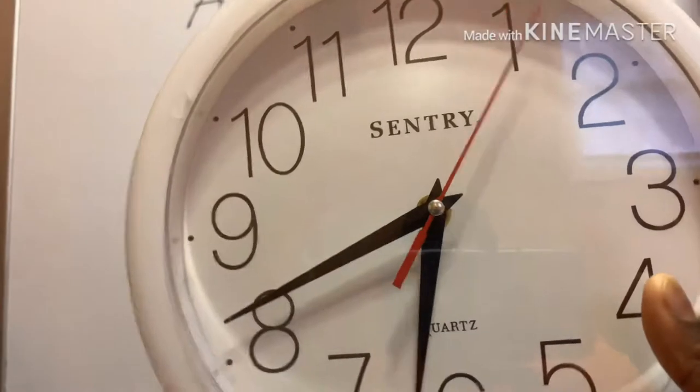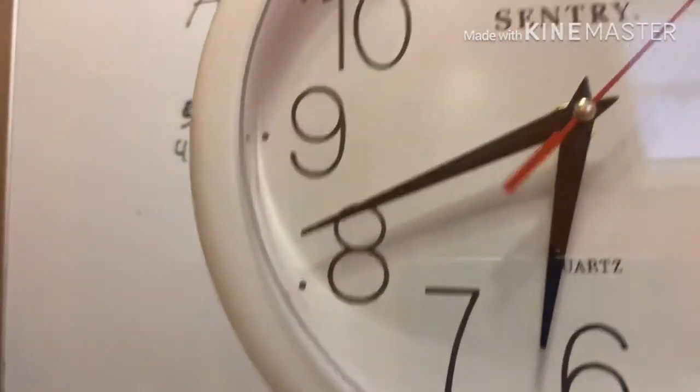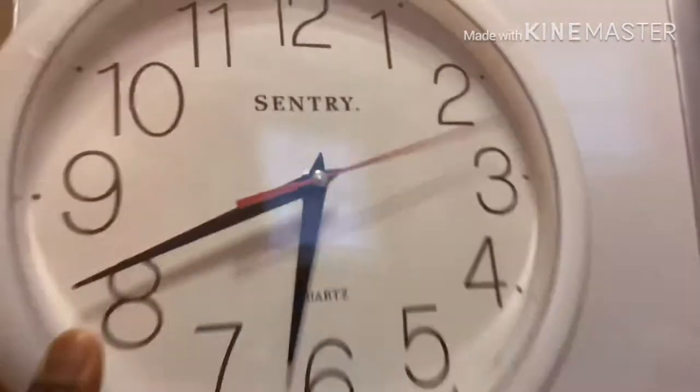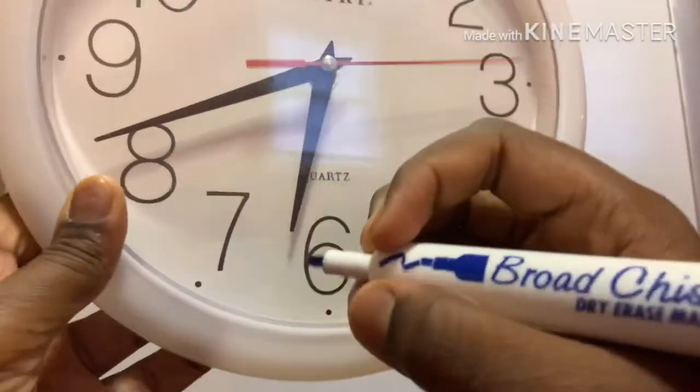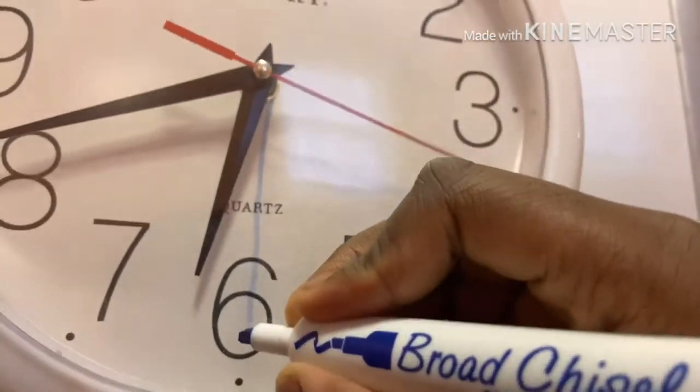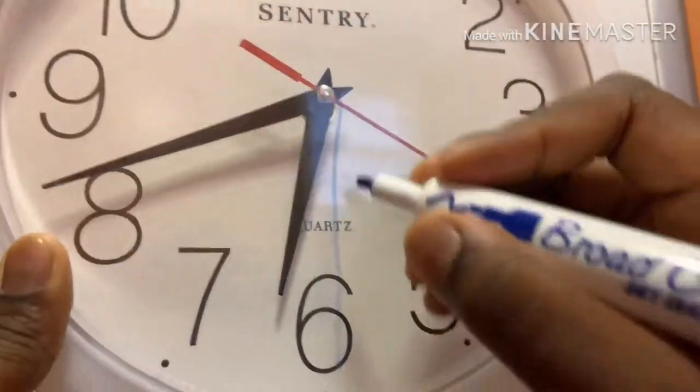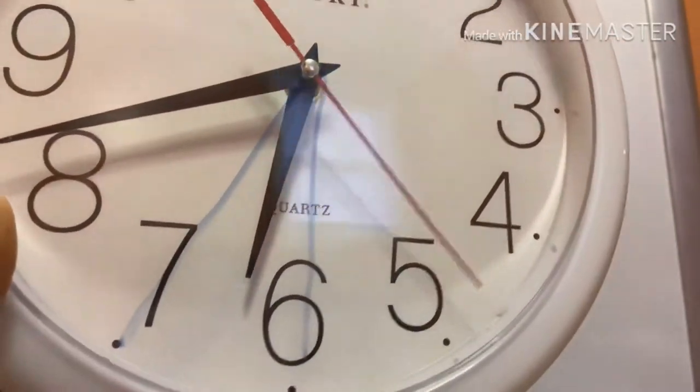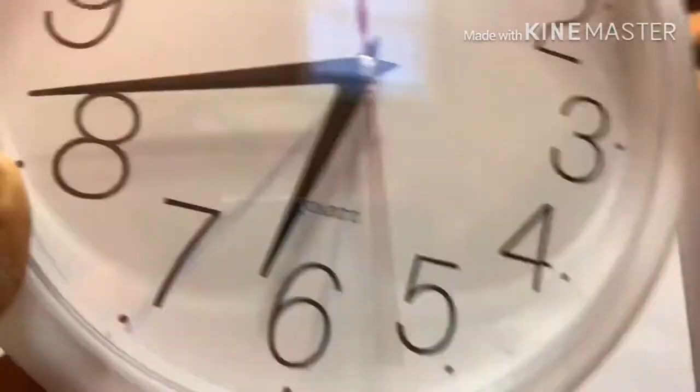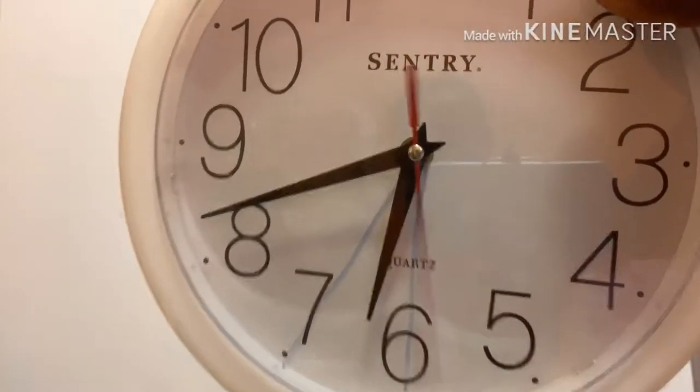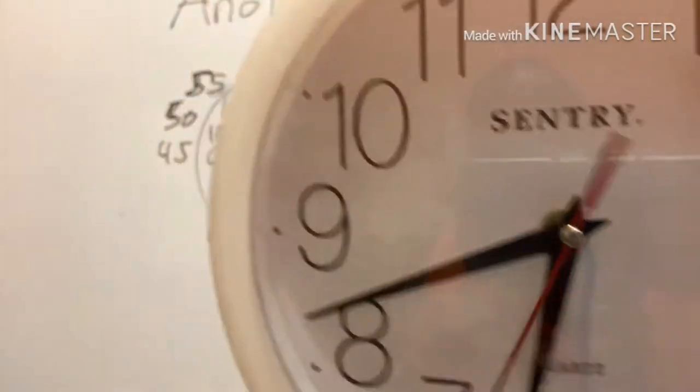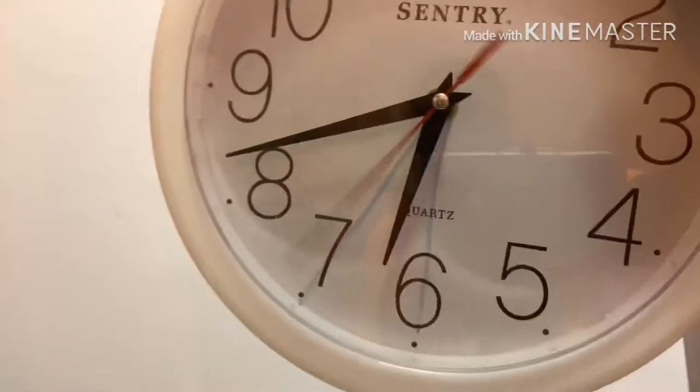This is how you can tell the hour hand. Whatever the hour hand is pointing to, that would be your time. So if it's right here and it's pointing to the six, it's six. If it's right here and almost pointing to the seven but not hitting the seven directly, it's still six o'clock. And that's what also trips up a lot of people.